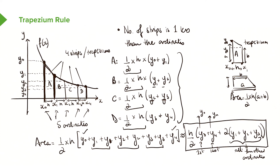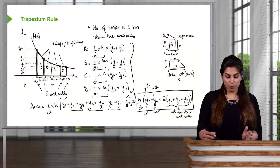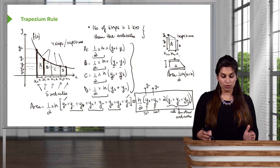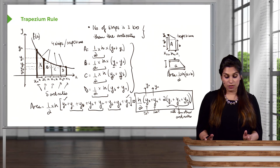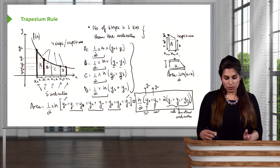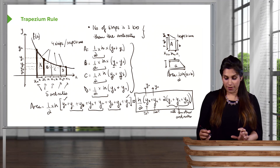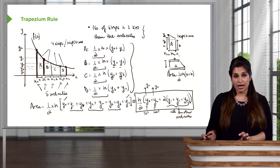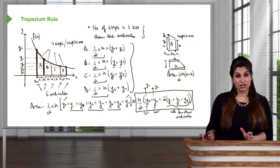We'll move straight into an example. But before that, I just want to recap what everything is in the trapezium rule. The number of strips and the number of ordinates relationship is quite important — strips is always one less than the number of ordinates. You don't have to derive this formula; that was just to see where it comes from. If you know the formula, all you have to do is substitute your y ordinates in and work out what h is. We'll do a numerical example now to explain how we apply this formula.